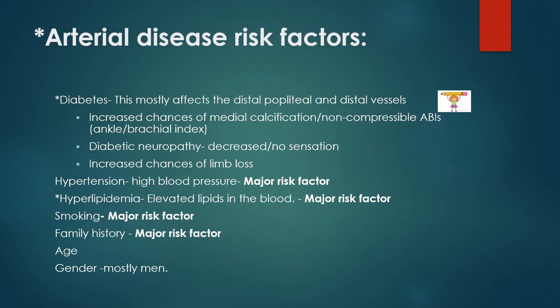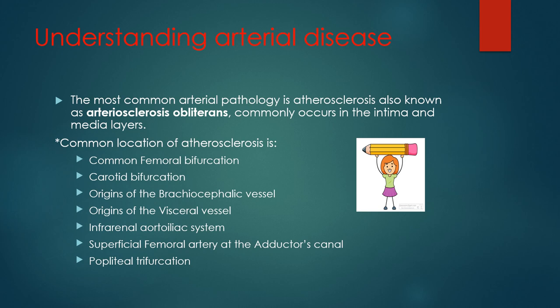Arterial disease risk factors include: diabetes — which mostly affects the distal popliteal and distal vessels, increases chances of medial calcification, non-compressible ABIs, diabetic neuropathy with decreased or no sensation, and increased chances of limb loss; hypertension (high blood pressure); hyperlipidemia (elevated lipids in the blood); smoking; family history; age; and gender — mostly men. The most common arterial pathology is atherosclerosis, also known as arteriosclerosis obliterans, commonly occurring in the intima and medial layer.